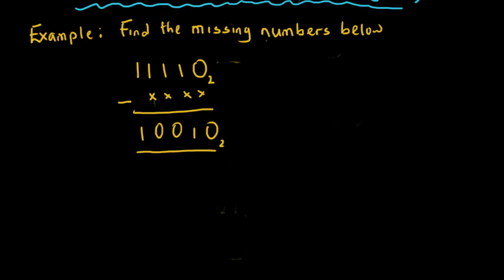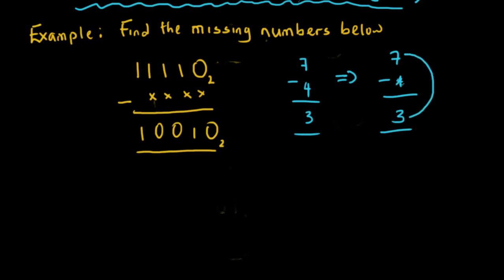Let's take another example. We are finding missing numbers: 11110 in base two minus an asterisk gives us 10010 in base two. Let's use an illustration again. Say we have seven minus four, which is three. If we omit a number and have seven minus asterisk equals three, how do we find the asterisk? We say seven minus three, which gives us four.